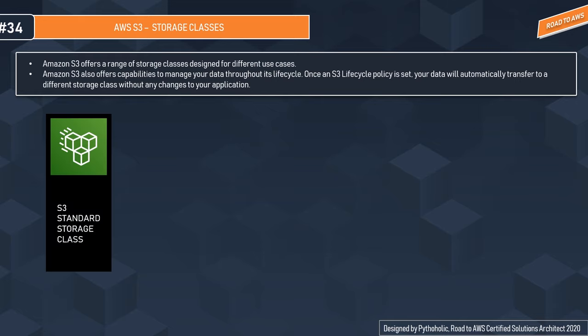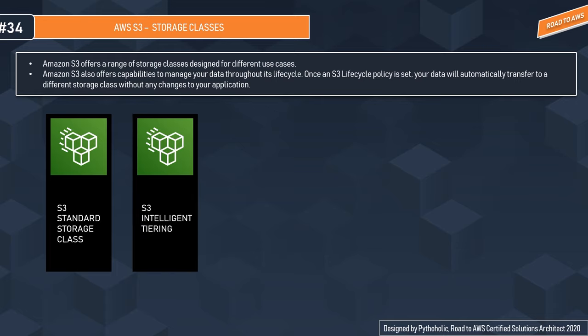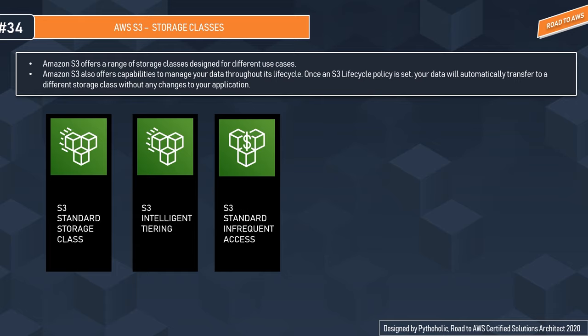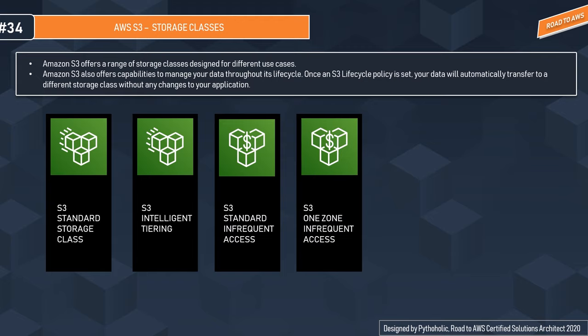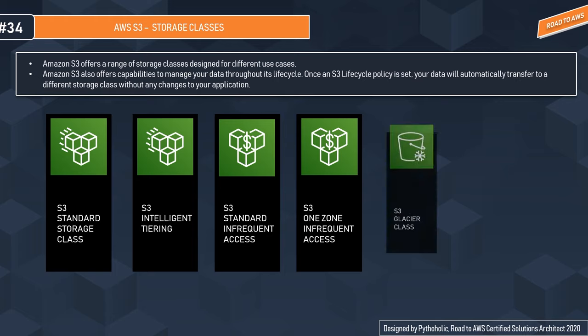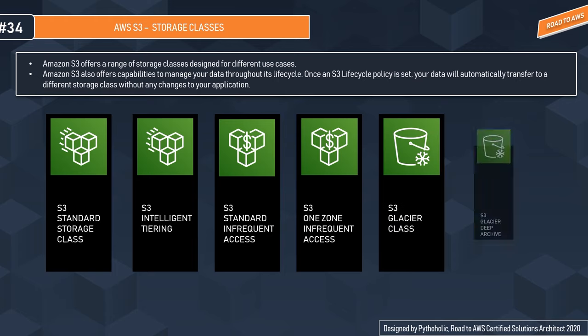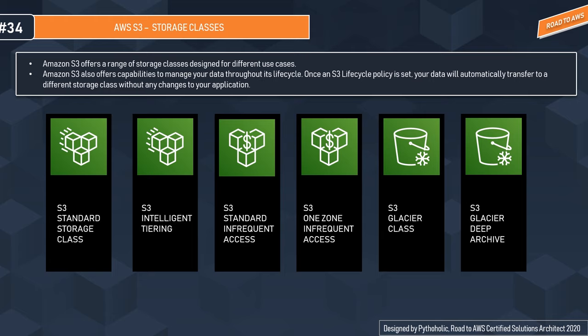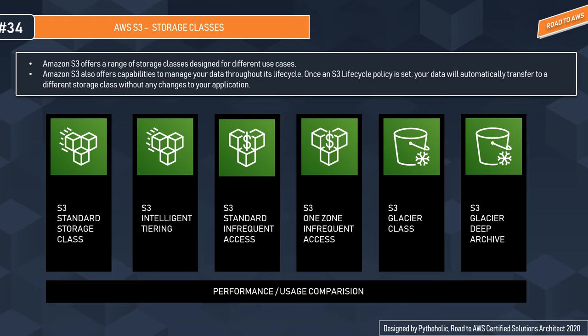The second option is S3 Intelligent Tiering, for data with unknown or changing access patterns. The third is S3 Standard Infrequent Access (Standard IA), and we also have Standard IA One Zone — both used for long-lived but less frequently accessed data. The next two are Amazon S3 Glacier and Amazon S3 Glacier Deep Archive, used for long-term archiving.